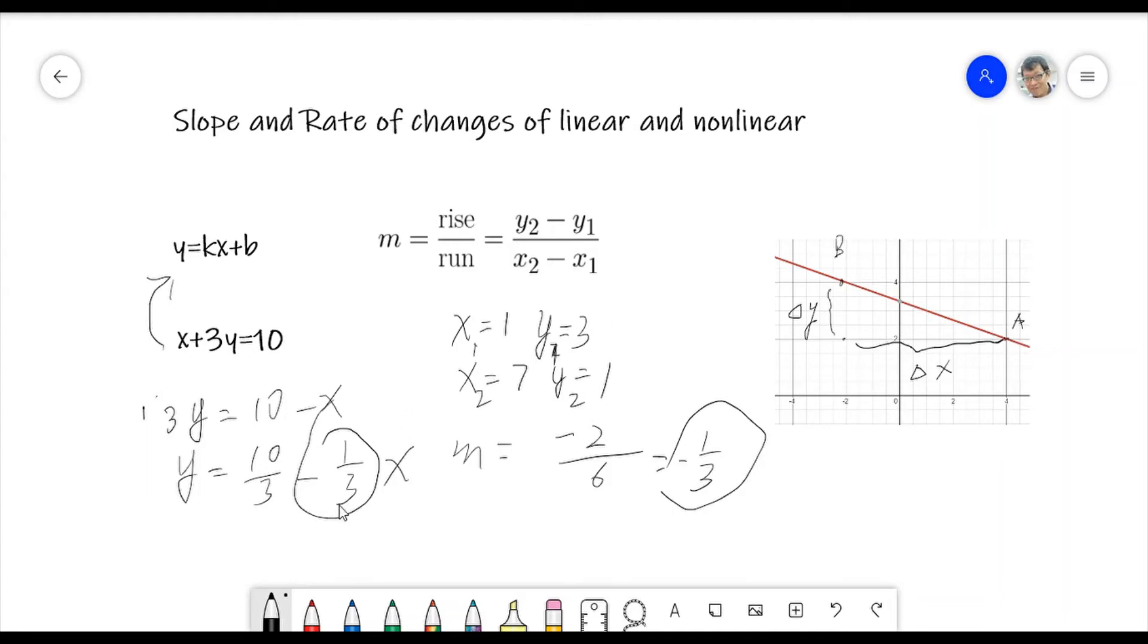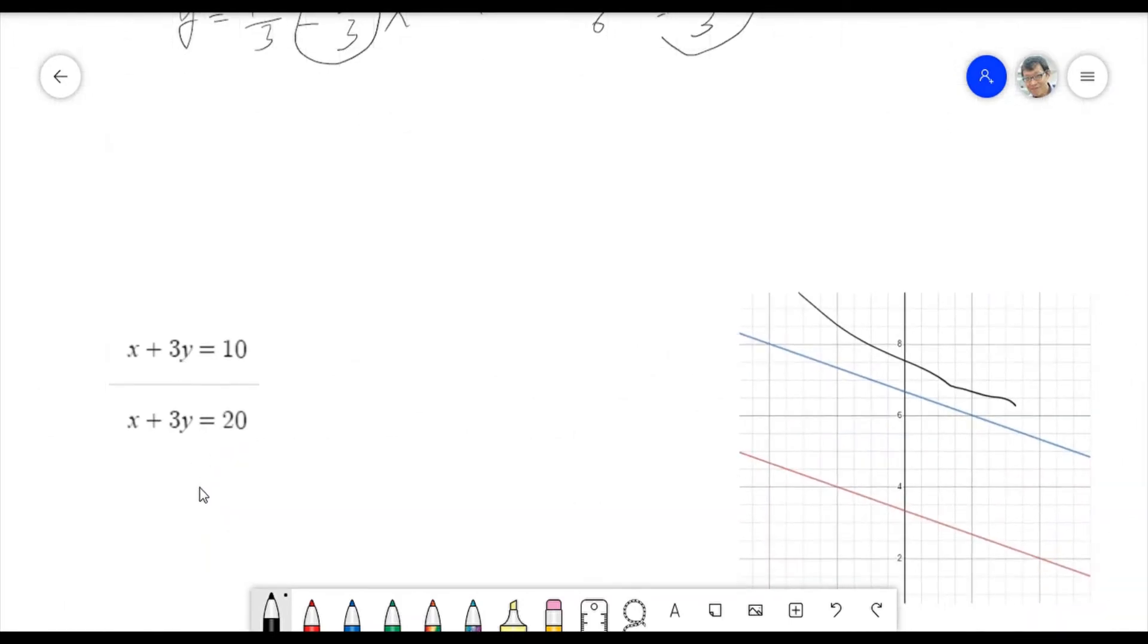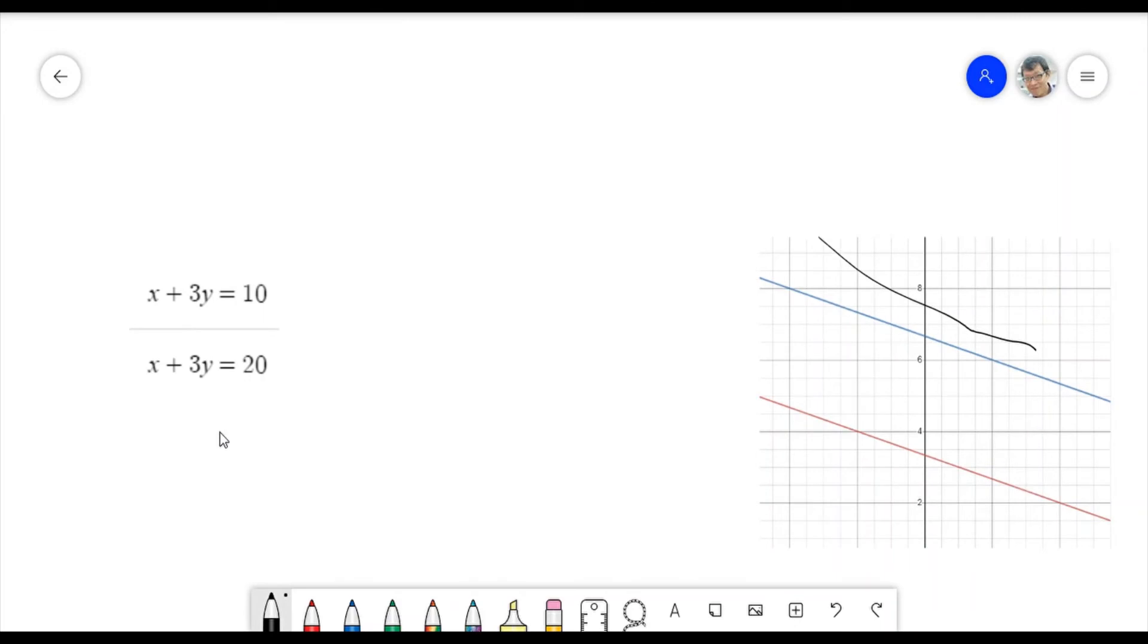Let's see some examples. I give you this one. You can see these two lines. One is X plus 3Y equals 10, another one is equals to 20. What we can observe from this, based on these two straight lines, we can find based on the graph, they are parallel. Why? Because they have the same slope.